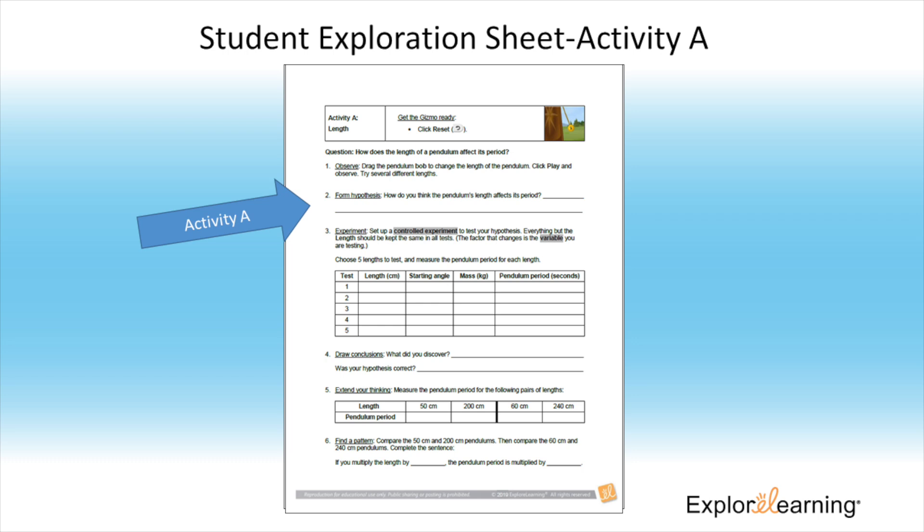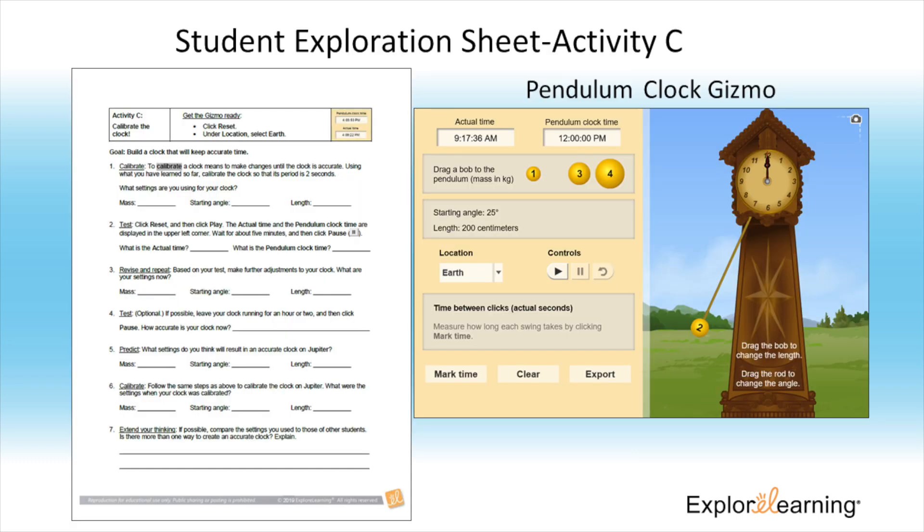This activity allows students the opportunity to clarify or learn new terminology that's a part of the pendulum clock gizmo, as well as give their own understanding of these items. After investigating all the variables on the gizmo, I ask my students to apply their knowledge to real life by calibrating the clock as described in Activity C.